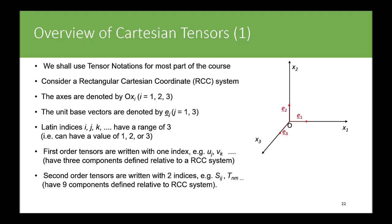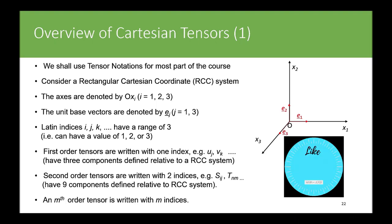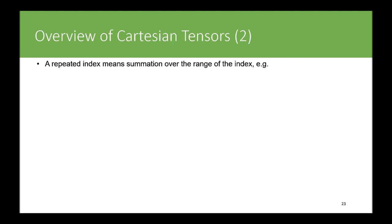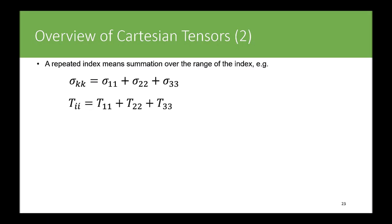Second-order tensors are written with two indices — for example X_ij or T_MN or S_ij — and have nine components defined relative to the rectangular Cartesian coordinate system. A repeated index means summation over the range of the index. For example, Σ_kk means Σ_11 + Σ_22 + Σ_33, since k ranges from 1 to 3. Similarly, T_ii means T_11 + T_22 + T_33.